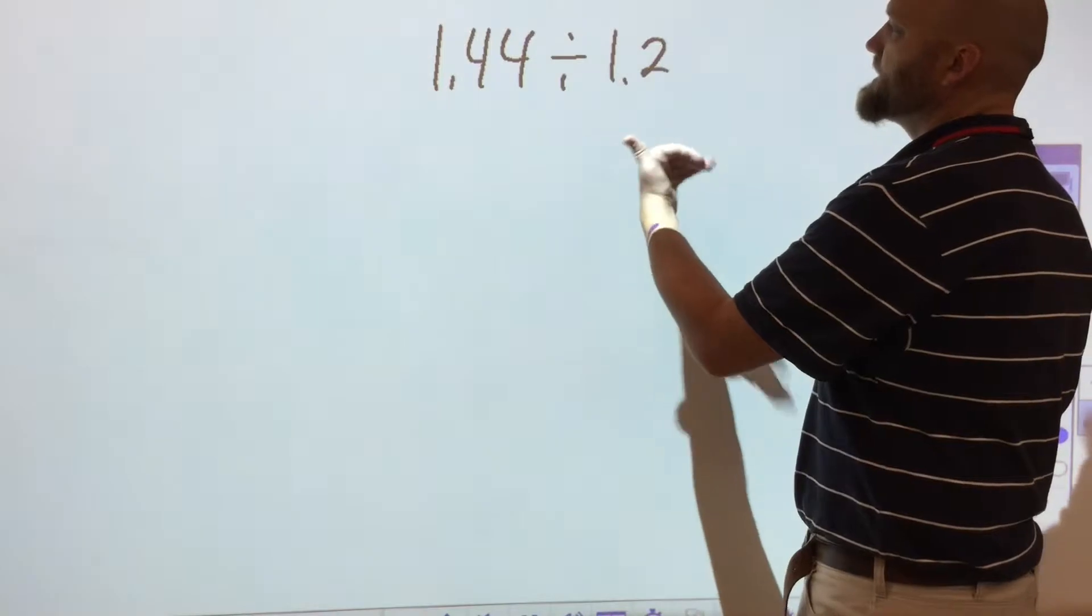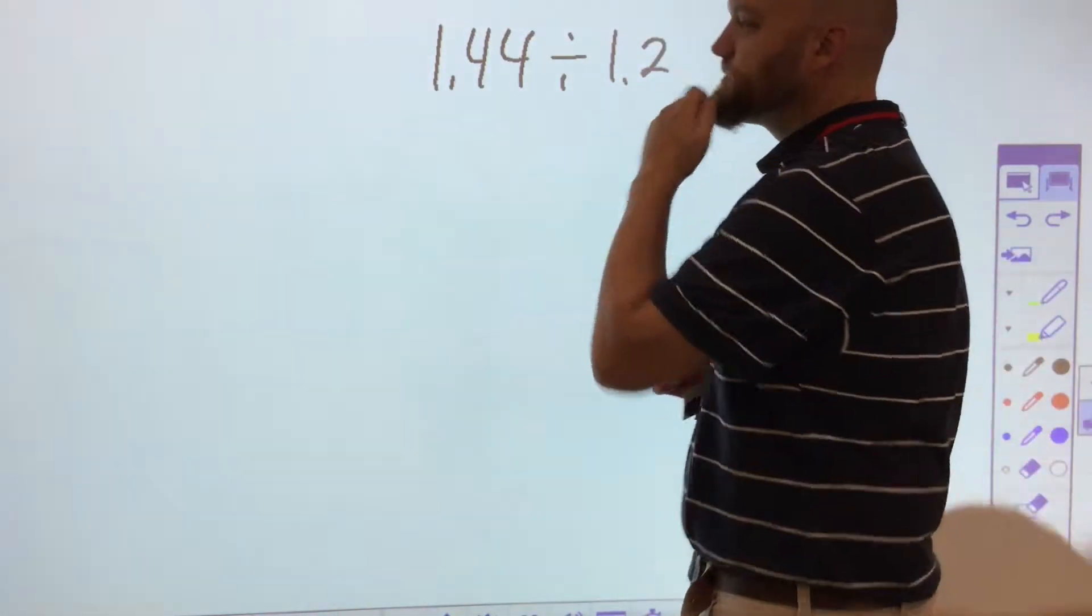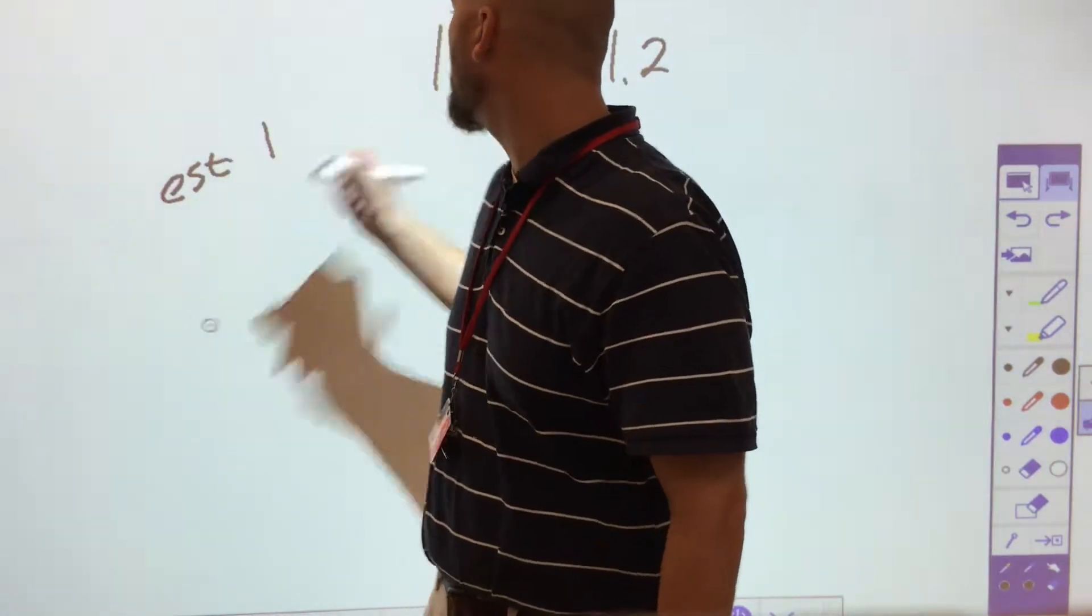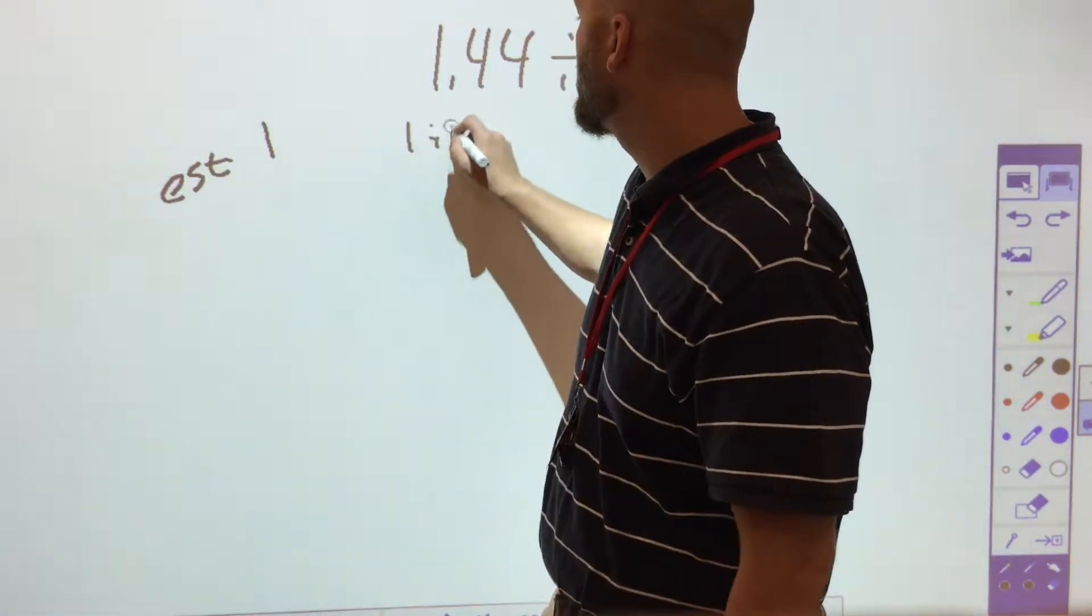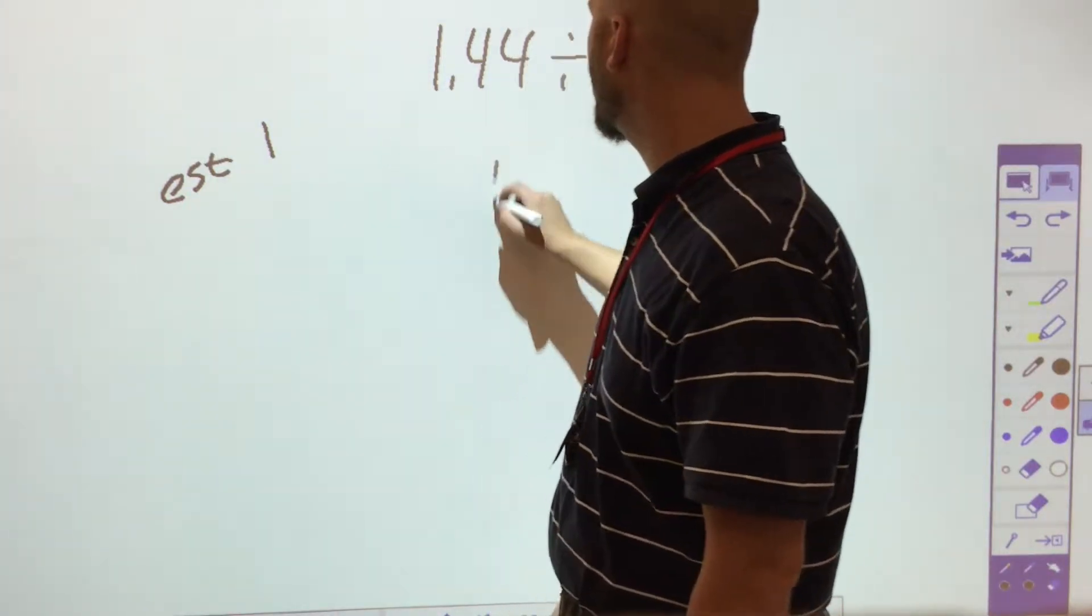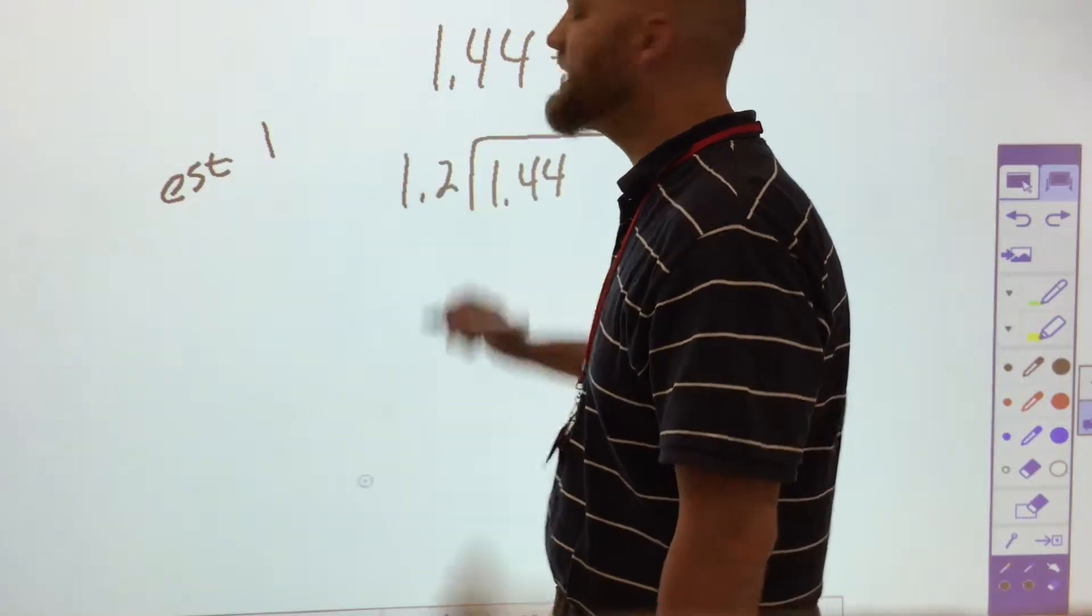And I realize that I'm dealing with something that's really close to 1 and something that's really close to 1. So my estimate should be close to 1. This is really 1 divided by 1 gives me 1. So then I set up my problem normally: 1.44 divided by 1.2.